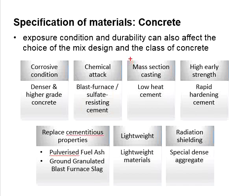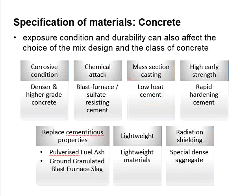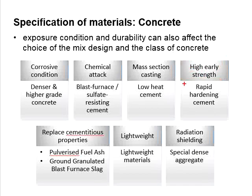For mass section casting, where high heat of hydration will be generated, low heat cement can be used in the mix. When high early strength is required, rapid hardening cement can be used.